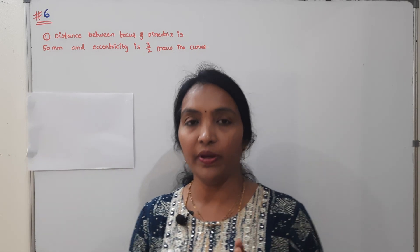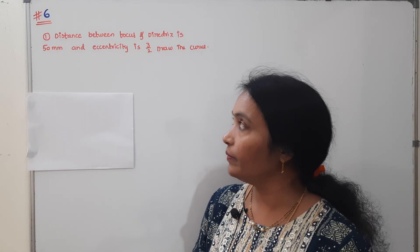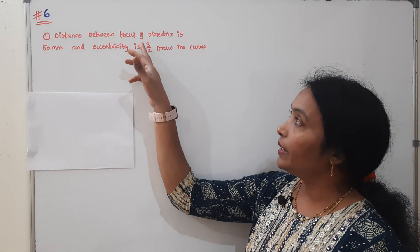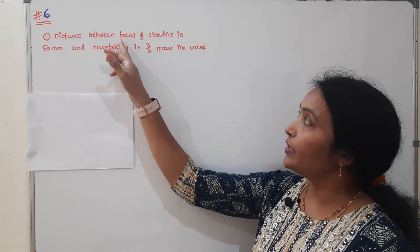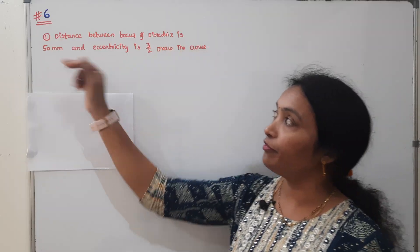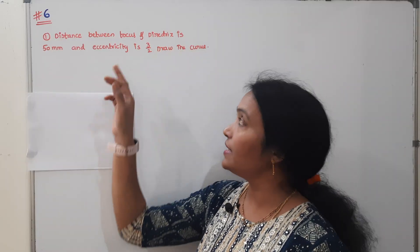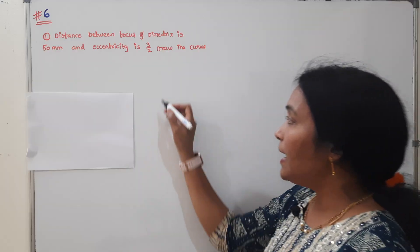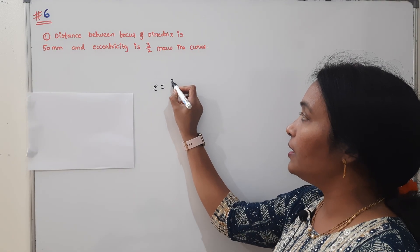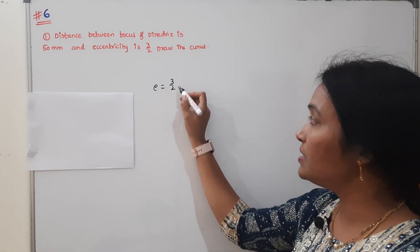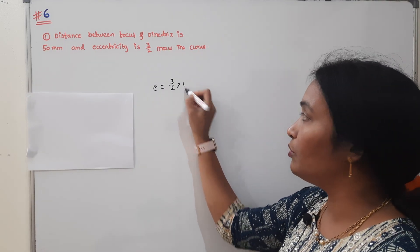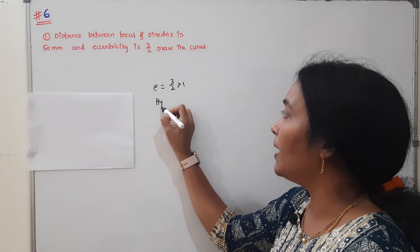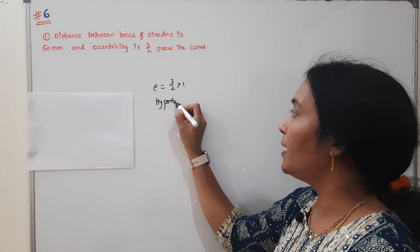Hi all of you. Welcome back to Ramah Reddy Maths Academy. Today, we are going to draw a curve where the distance between focus and directrix is 50 mm and eccentricity is 3 by 2. Since eccentricity 3/2 is greater than 1, it forms a hyperbola.